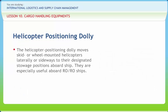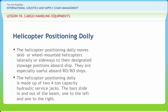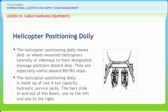The helicopter positioning dolly moves skid or wheel-mounted helicopters laterally or sideways to their designated stowage positions aboard ship. They are especially useful aboard RO-RO ships and make a tight stow possible when loading helicopters. The helicopter positioning dolly is made up of two 4-ton capacity hydraulic service jacks. The bars slide in and out of the beam, one to the left and one to the right, extending the width or reach of the beam to conform to the width between the skids or wheels of the helicopter.